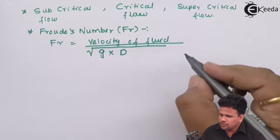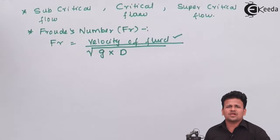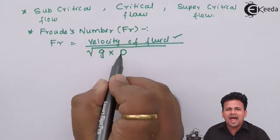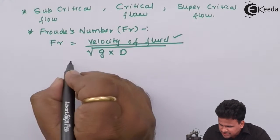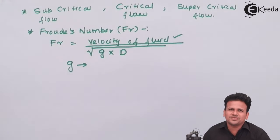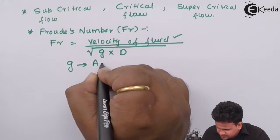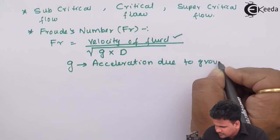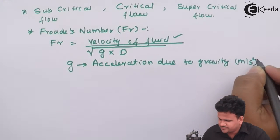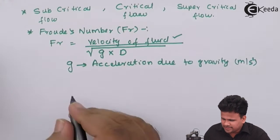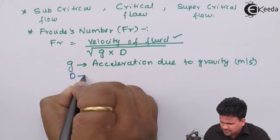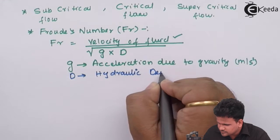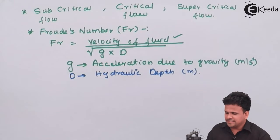We already know what the velocity of the fluid is — that is the velocity with which the fluid flows. But let us understand what G and D are here. G is the acceleration due to gravity, given in meters per second squared. D is the hydraulic depth, given in meters.